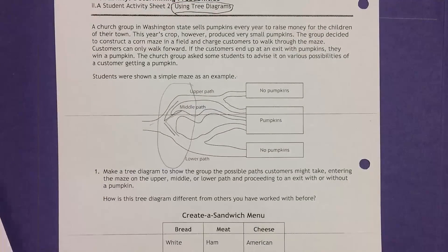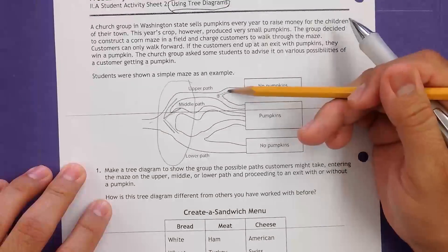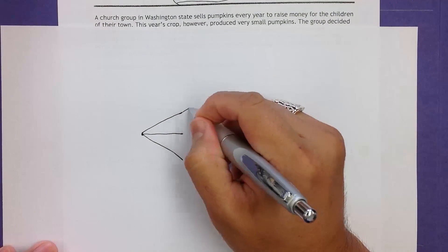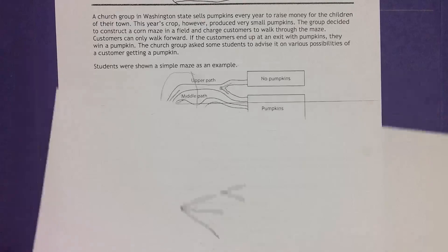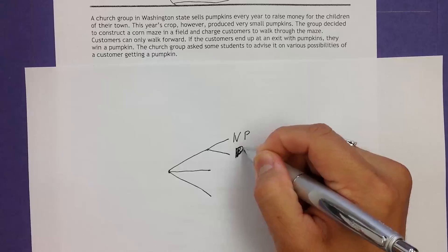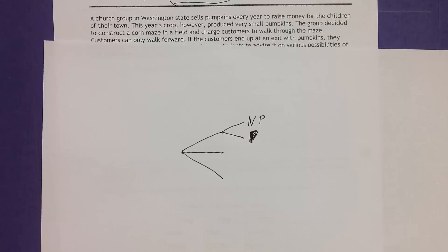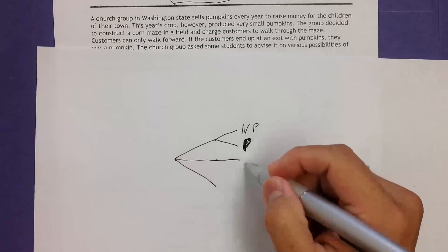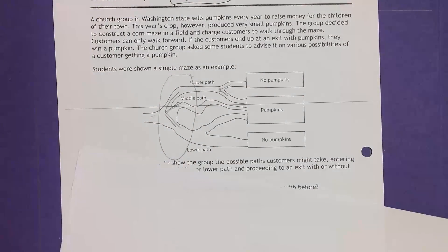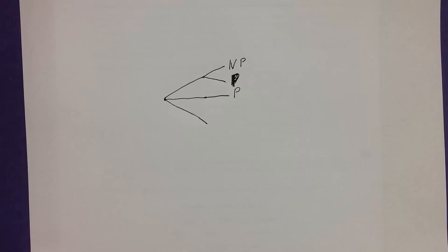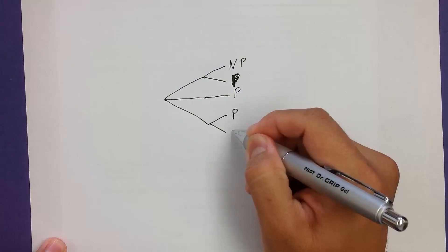Looking at the upper path: when you get over here, it branches into two different paths — up or down. Remember, you can't walk backwards. Looking at the map, the upper path has no pumpkins, and the lower path has pumpkins. If you keep walking along the middle path, it doesn't branch — so once you get there, you get pumpkins. The final path branches up and down: pumpkins one way, no pumpkins the other.